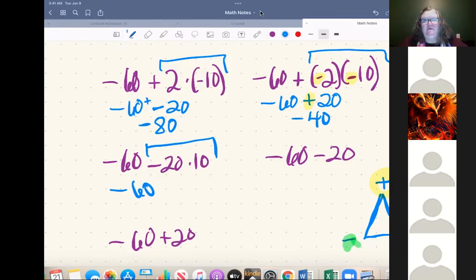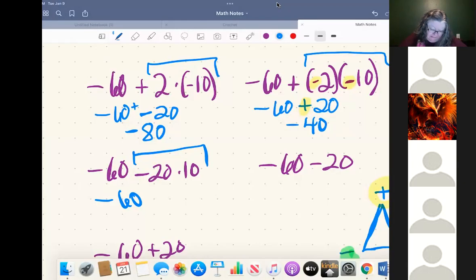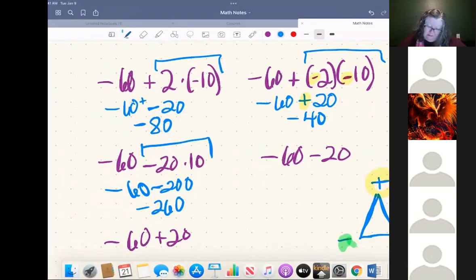That's a big number. Did I even write that down right? I did. That's negative 200. So that's going to be negative 200 and 60. Then we have negative 60 minus 20. That's just negative 80.